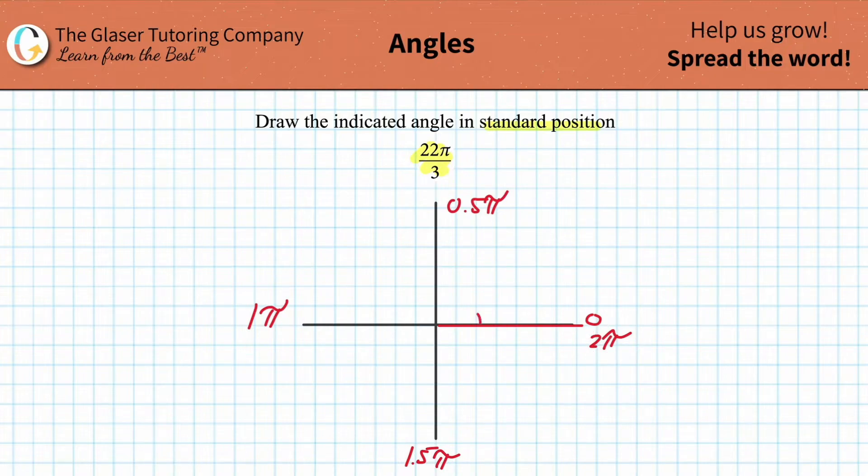Now, imagine you had to keep rotating, and you didn't stop here, but instead you now rotated this full length and then continued up to here. How many radians would you have traveled? Well, you would have traveled pi plus another half of pi. In other words, you would have traveled 2.5 pi.